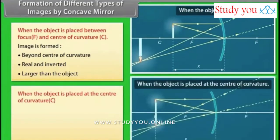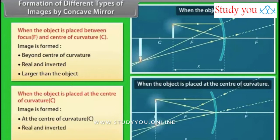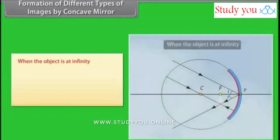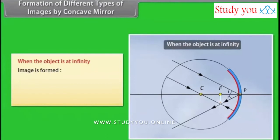When the object is placed at the center of curvature C, the image is formed at the center of curvature C — real, inverted, and the same size. When the object is at infinity, the image is formed at the focus — real, inverted, and smaller than the object.